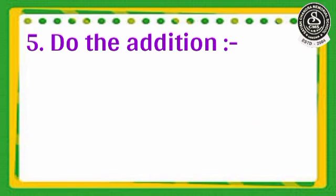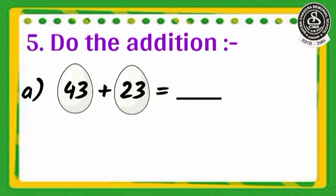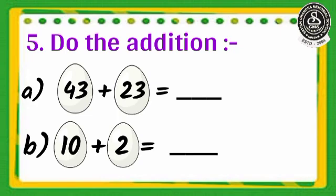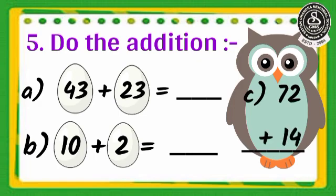Question number 5. Do the addition. A: 43 plus 23. B: 10 plus 2. C: 72 plus 14.